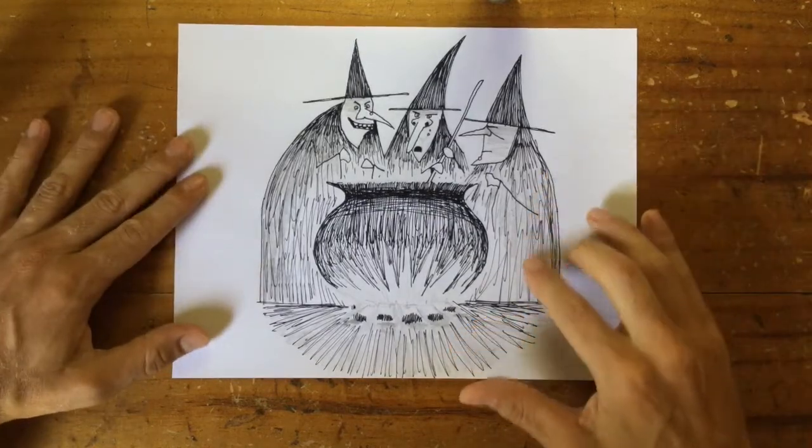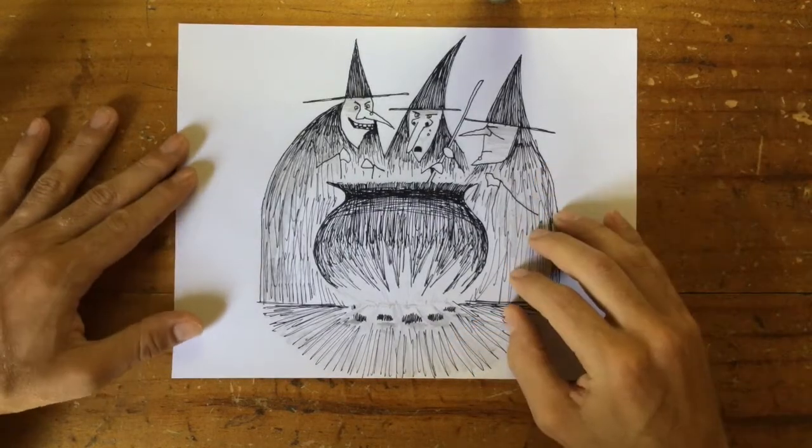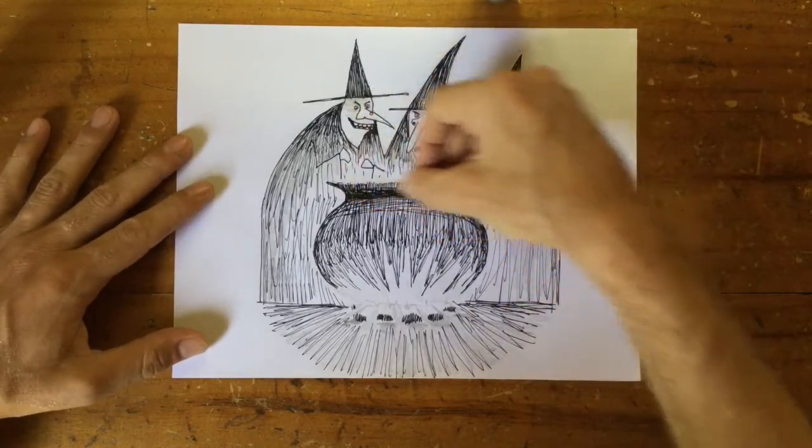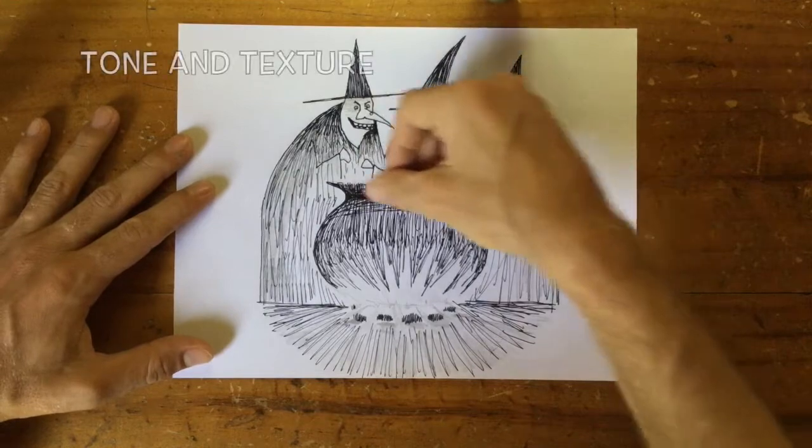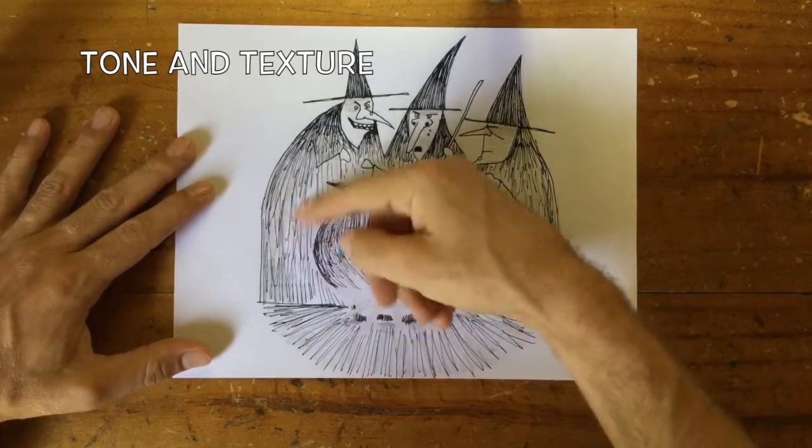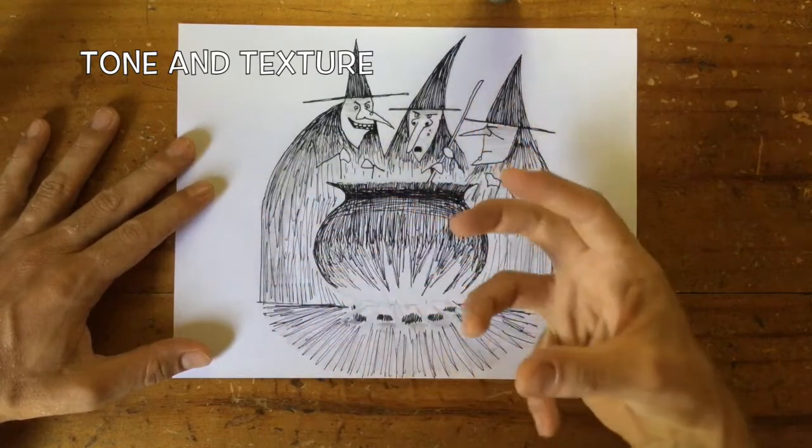We're using the same combination of marker and pencil, and similar techniques to what we did last time. The marker gives us the very dark parts of the picture, so we vary the tone, whether it's light or dark, and it also gives us this kind of scratchy feeling, gives us a textural feeling.